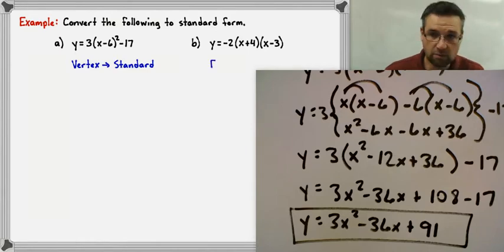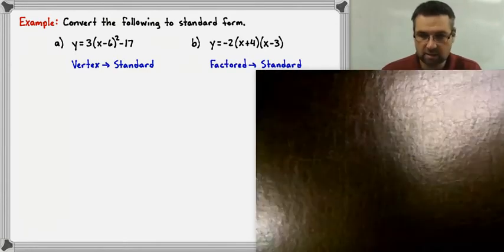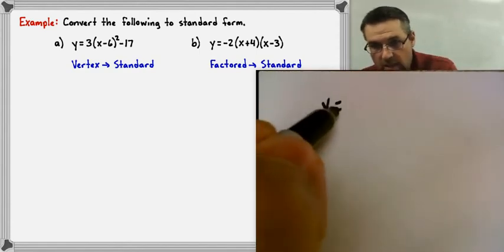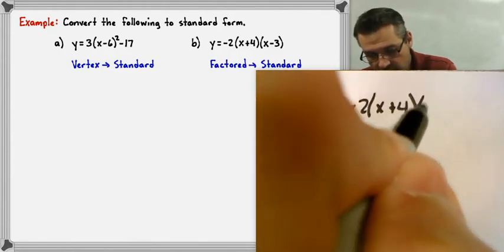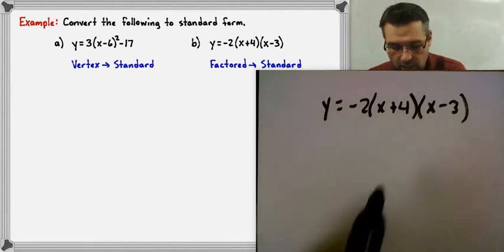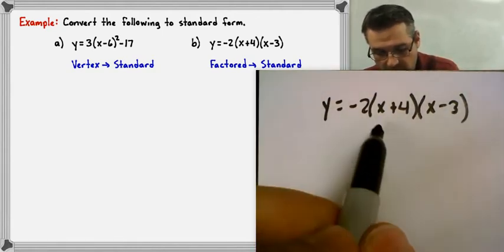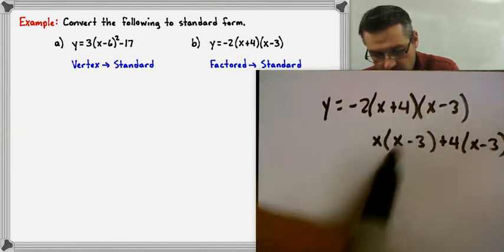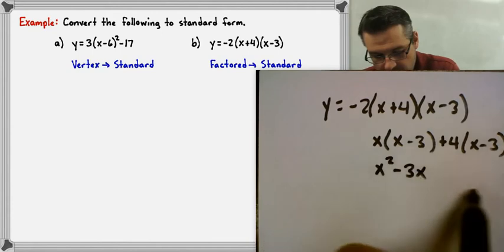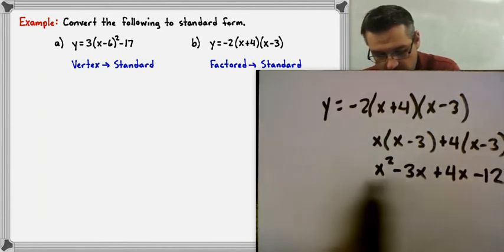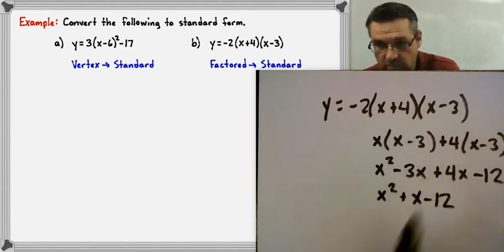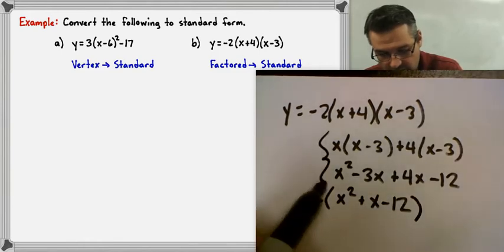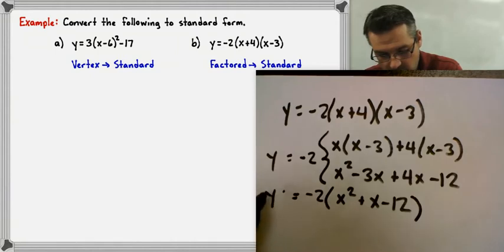For the second one, that's written in factored form, and we want to convert to standard form. We have y equals negative 2 times (x plus 4) times (x minus 3). This is similar to the previous example but already expanded as two binomials. We write x times (x minus 3) plus 4 times (x minus 3) and distribute, getting x squared minus 3x plus 4x minus 12. But we still have that negative 2 out front, so don't forget to carry that down.